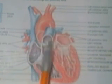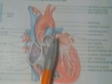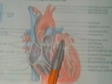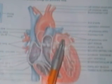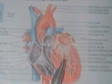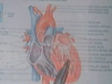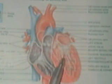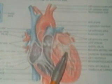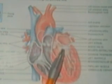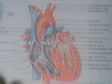They don't contract at the same time, because that would be counterproductive. The left atrium contracts and pushes the blood into the left ventricle, and the valve here is called the bicuspid valve.